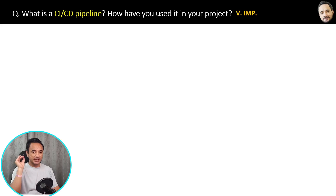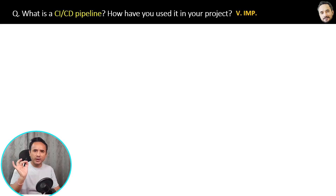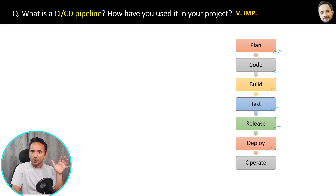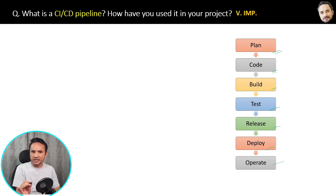Question two: What is a CI/CD pipeline? Have you used it in your project? By the end, you will be super confident on CI/CD pipelines. If you have some experience as a developer, you already have some idea about the steps involved in creating an application: first plan, then code, build, test, release, deploy, and finally operate or monitor the production application. That is the normal application lifecycle.